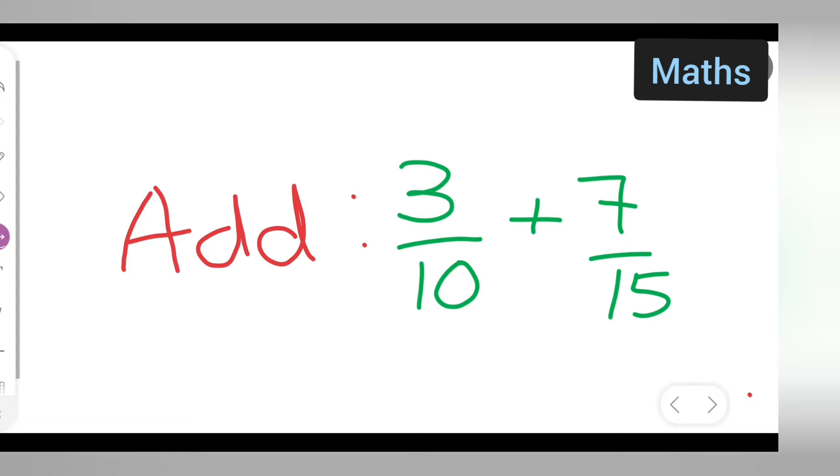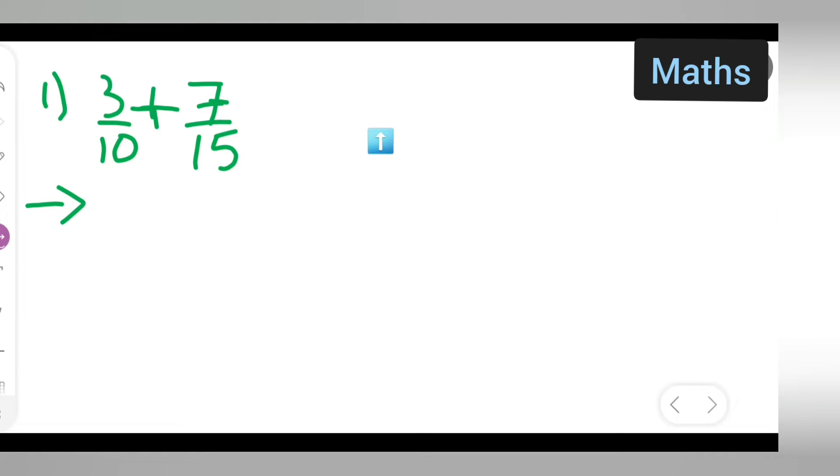So what we need to do is, first there are big number denominators, so what you will have to do is take the LCM of 10 and 15.